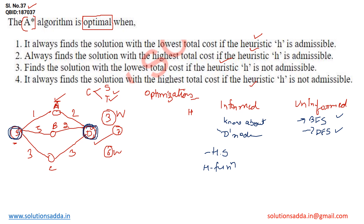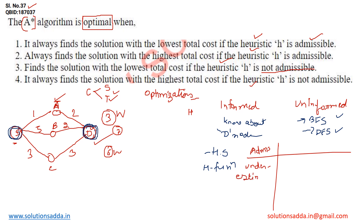In heuristic search there are two kinds: admissible and non-admissible. For admissible, what we are doing is estimating how much cost we will pay when we choose a path. In admissible heuristic, we never overestimate this cost — it is always underestimating or equal to the total cost. Mathematically: h(n) ≤ actual total cost to destination. At the initial stage, the estimated cost will always be less than or equal to the actual total cost.